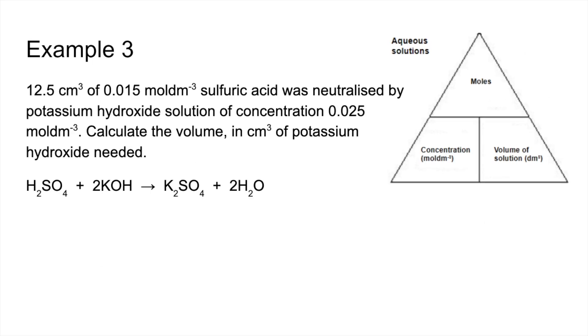The final one, we've got to calculate a volume required now. So we're sort of flipping the formula triangle slightly. Same method, though. So moles of known chemical, we've got the concentration and volume for the sulphuric acid. So that's 1.875 times 10 to the minus 4.